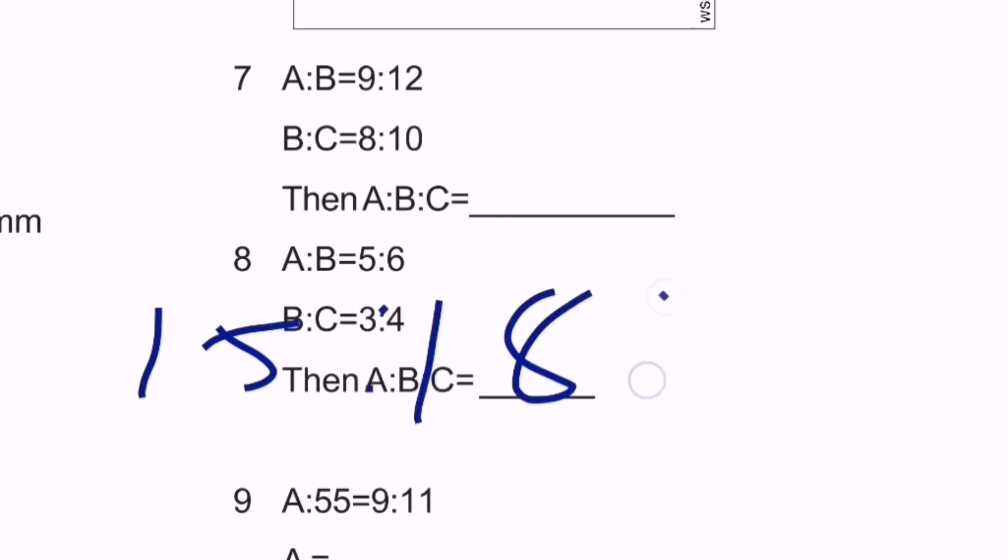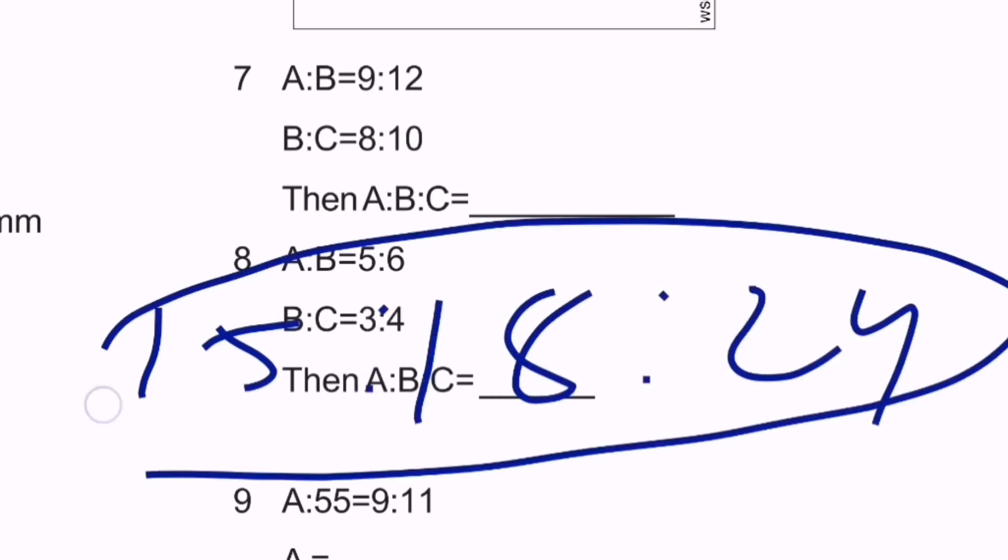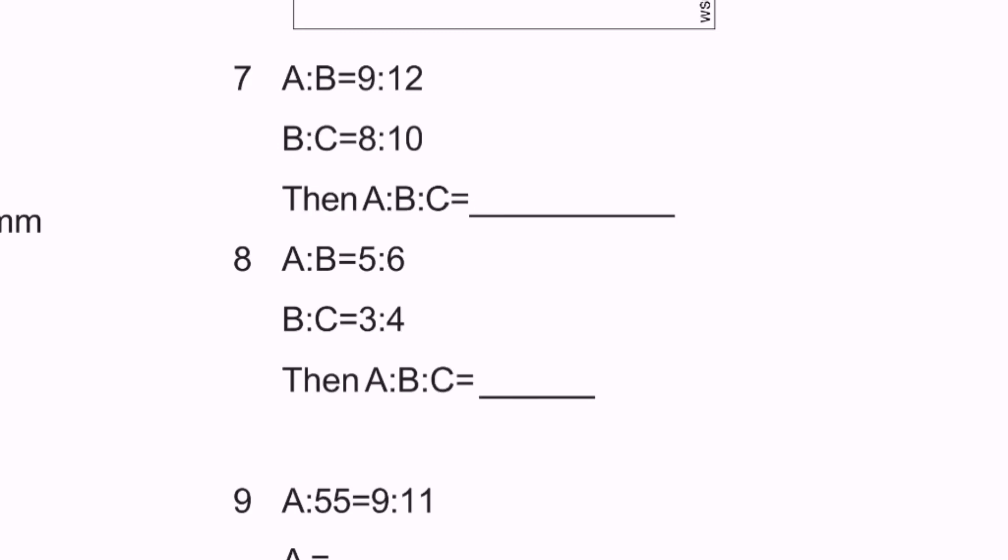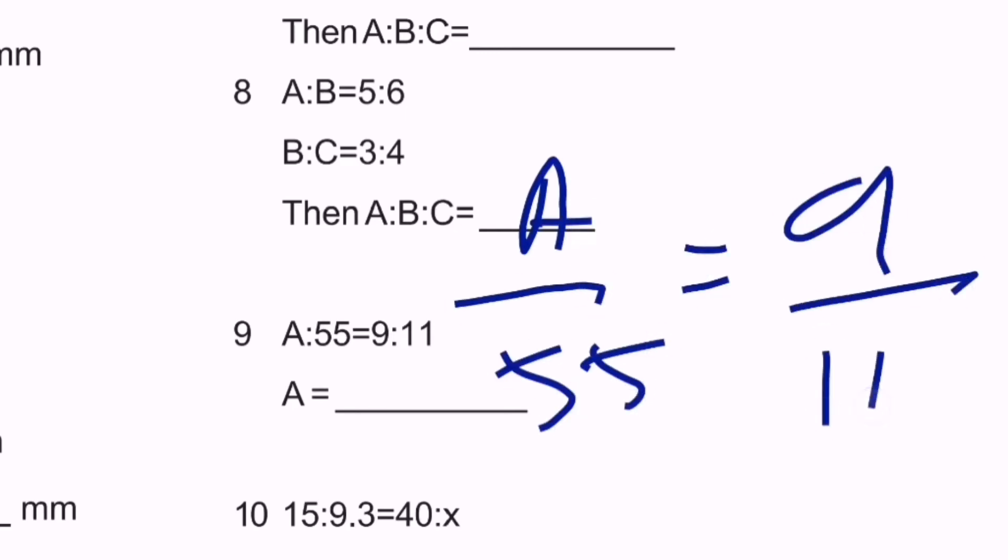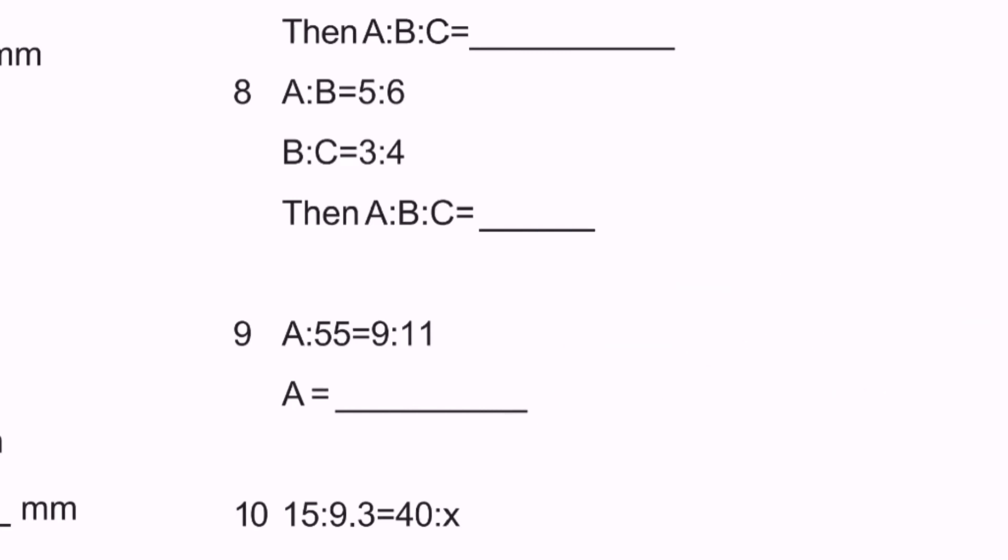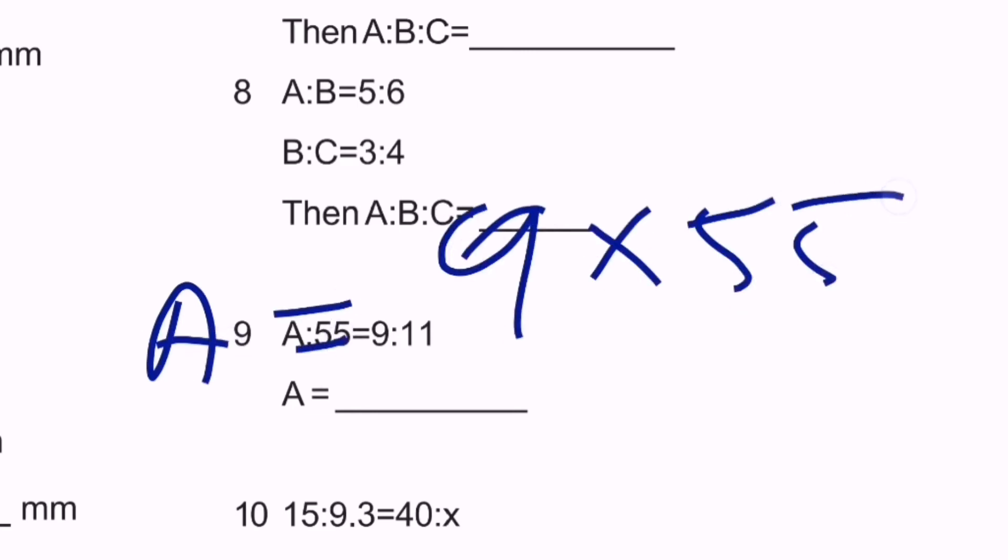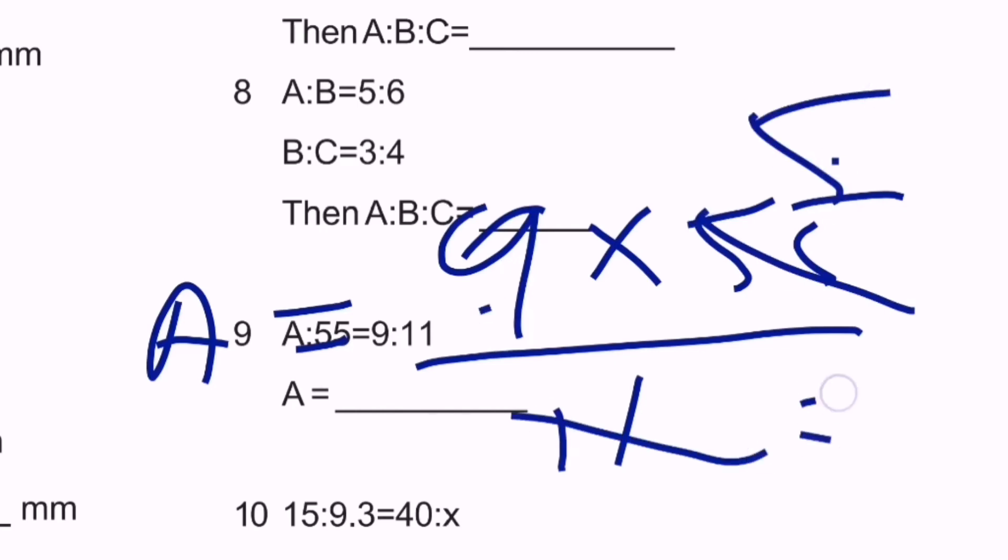Question number nine: A/55 equals 9/11. So 55 times 9 divided by 11. Our answer will be: 11 goes into 55 five times, 9 times 5 is 45. The answer is 45.